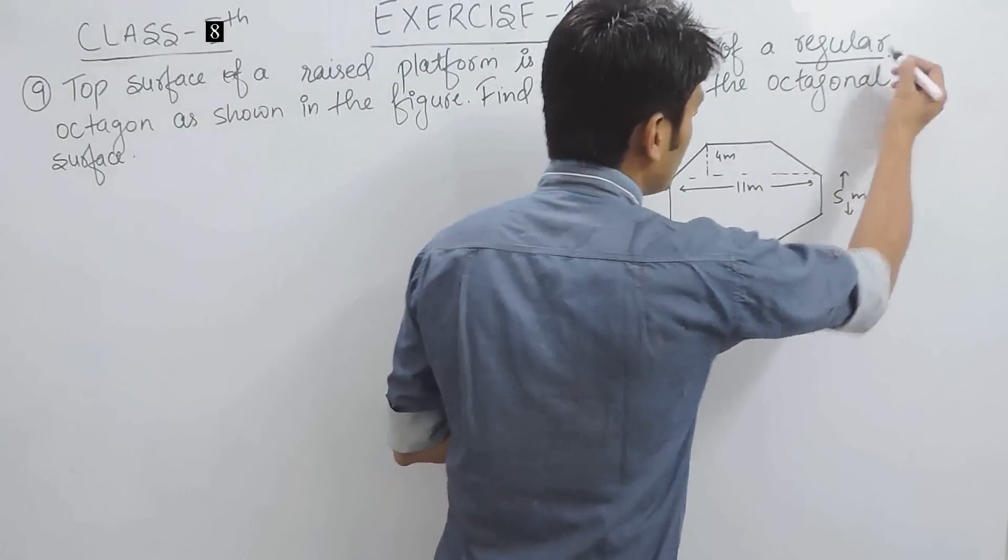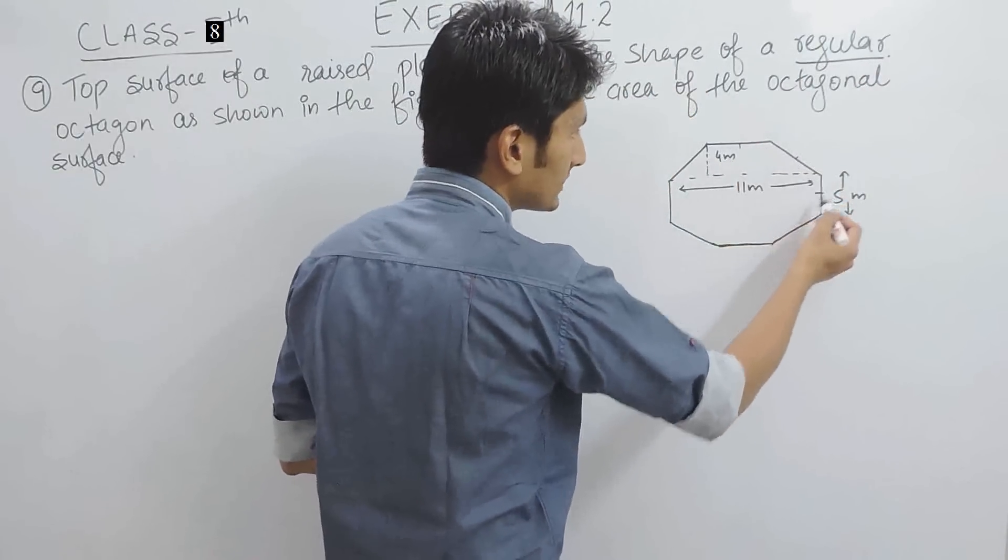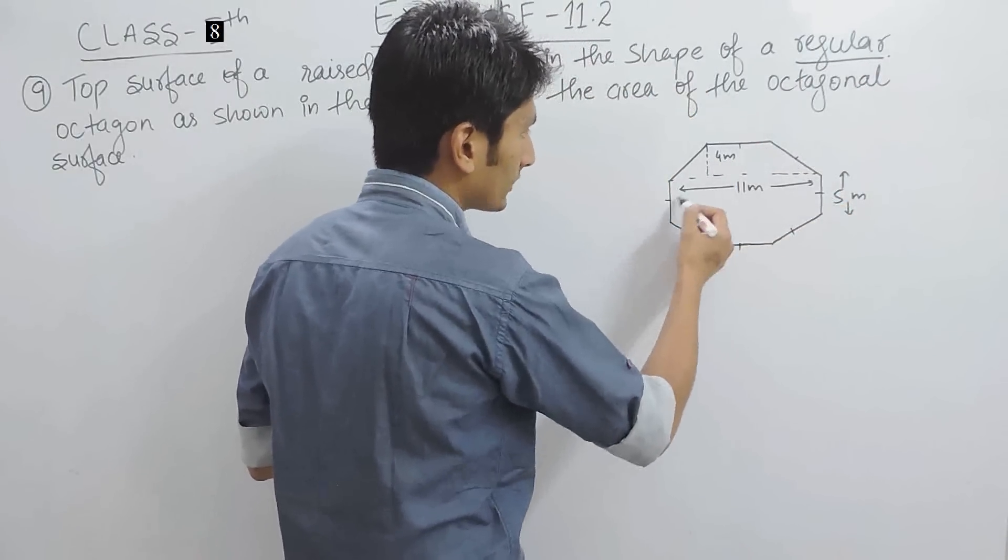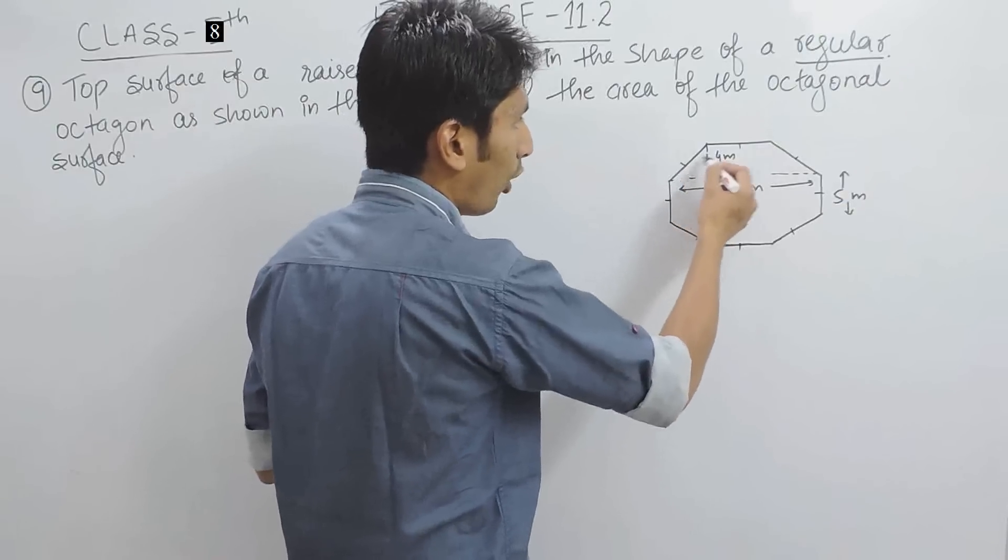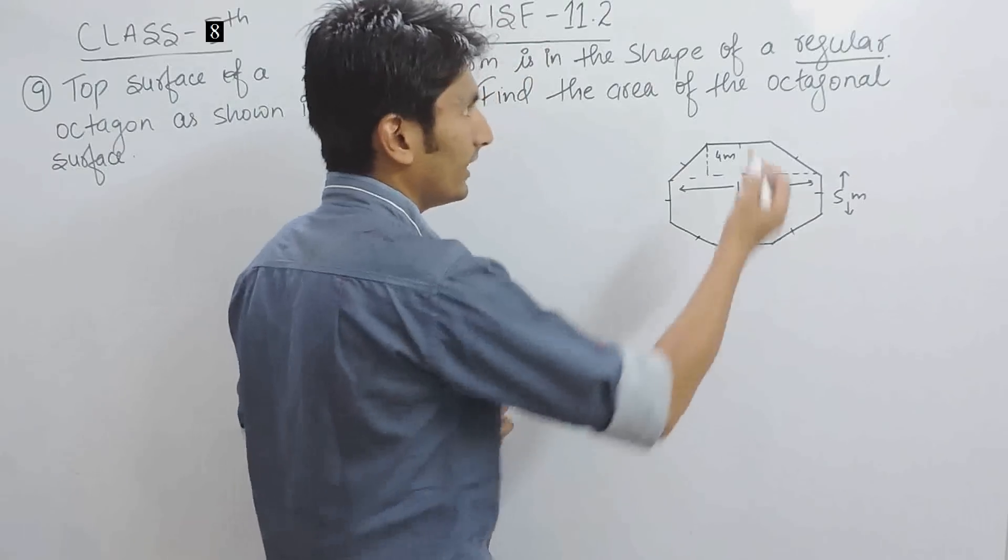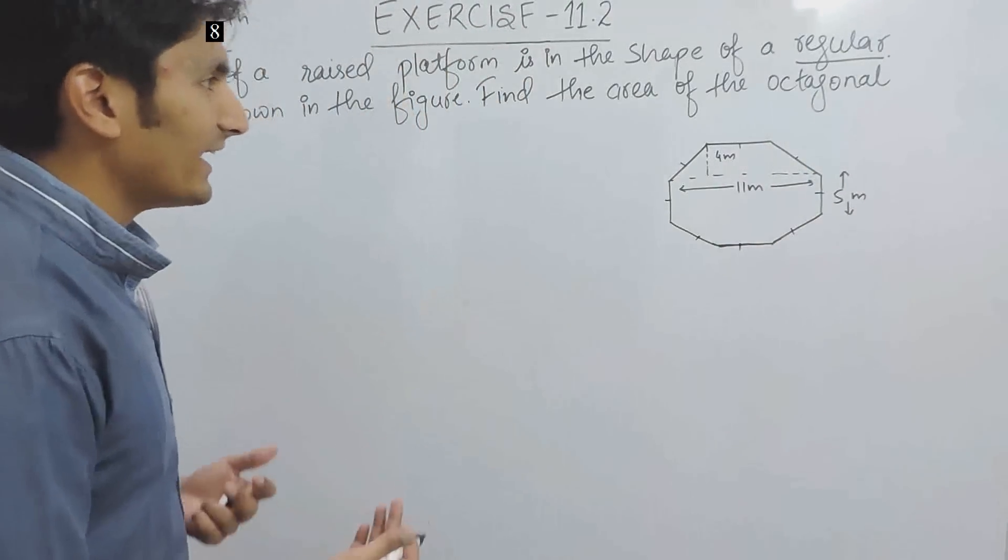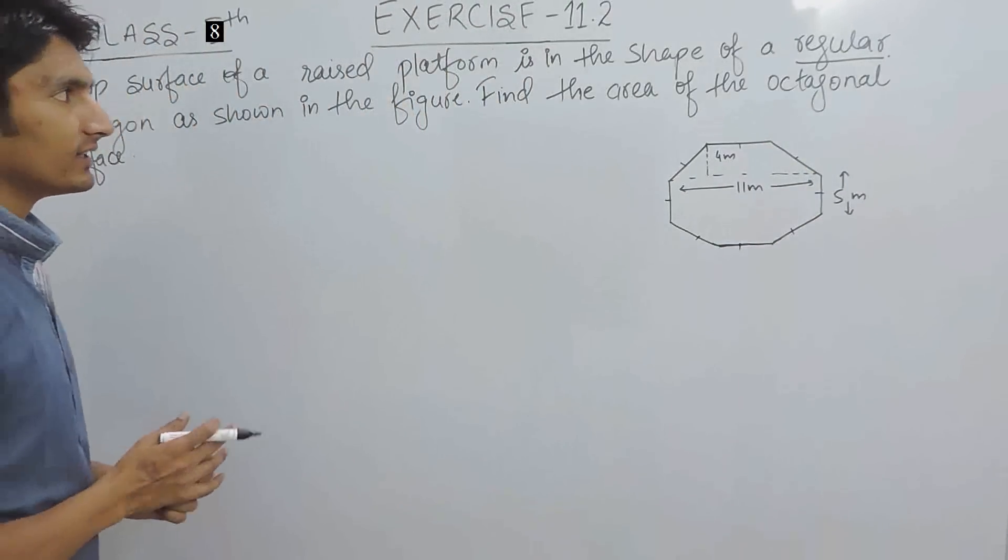Regular word means all the sides of this octagon are equal and all the angles are equal. Regular figure means all sides and every angle is equal.